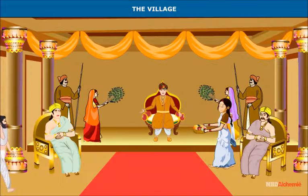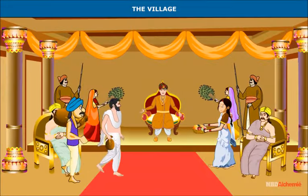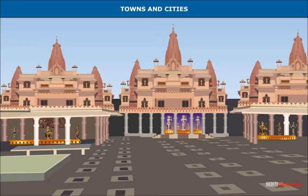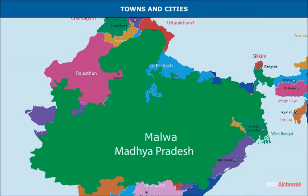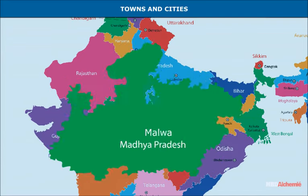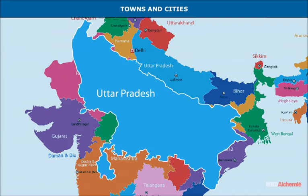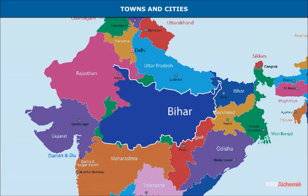Towns and cities: These laborers were paid wages for their work. This period saw the rise of many towns and cities. The literary sources point out the existence of such cities as Ujjaini in Malwa, Tamralipti in the Ganga delta, Ayodhya and Koshambi in Uttar Pradesh, and Champa, Vaishali, and Rajgriha in Bihar.